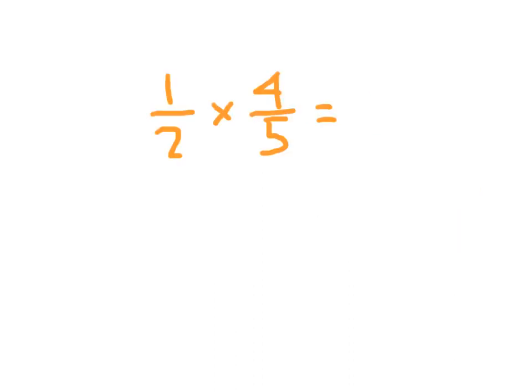One final one before we let you try. What would we multiply in the numerator? Right, 1 times 4. What would we multiply together for the denominator? I would have accepted 2 times 5, or even 5 times 2. What is 1 times 4? 4. And what is 2 times 5? 10.